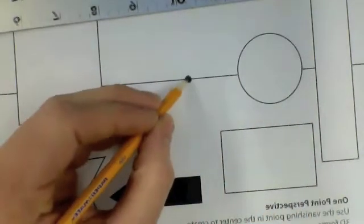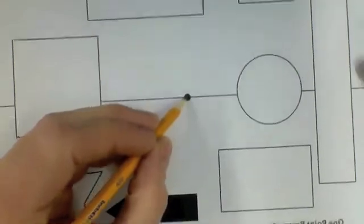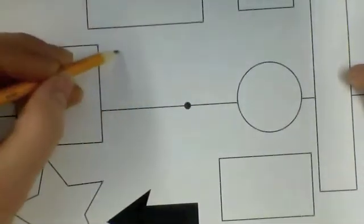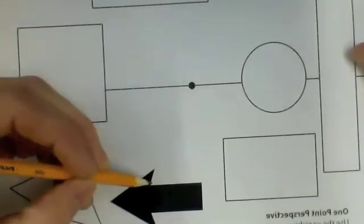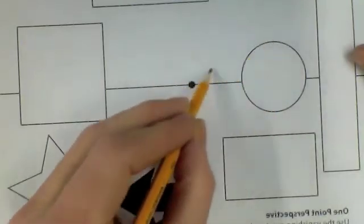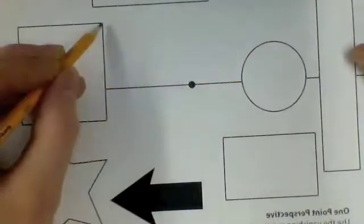Anything below that line you'll see the top of. Anything above that line you'll see the bottom of. If the object is directly on that line you will not see the top or bottom, instead you'll see the sides. The vanishing point will always be on the horizon line, directly on it, never above, never below.